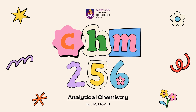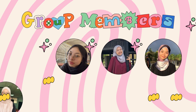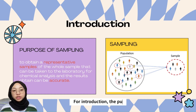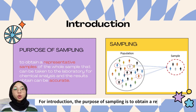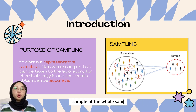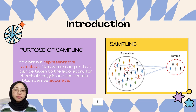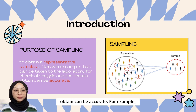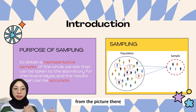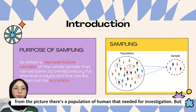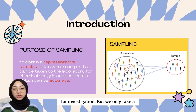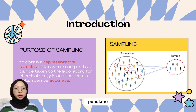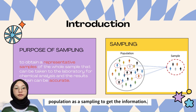Thank you for joining us. For introduction, the purpose of sampling is to obtain a representative sample of the whole sample that can be taken from the lab for chemical analysis and the result obtained can be accurate. For example, from the picture, there is a population of humans needed for investigation, but we only take a few of them — the sample members of the population — as a sampling to get their information.